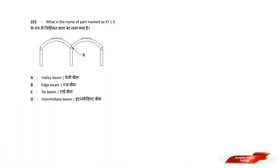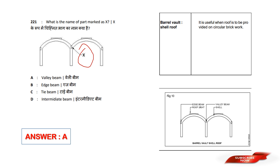What is the name of the part marked as X? Options are: A) Valley Beam, B) Edge Beam, C) Tie Beam, D) Intermediate Beam. Answer option A — Valley Beam. This is a barrel vault shell roof, and the part marked as X is the Valley Beam. Answer option A.